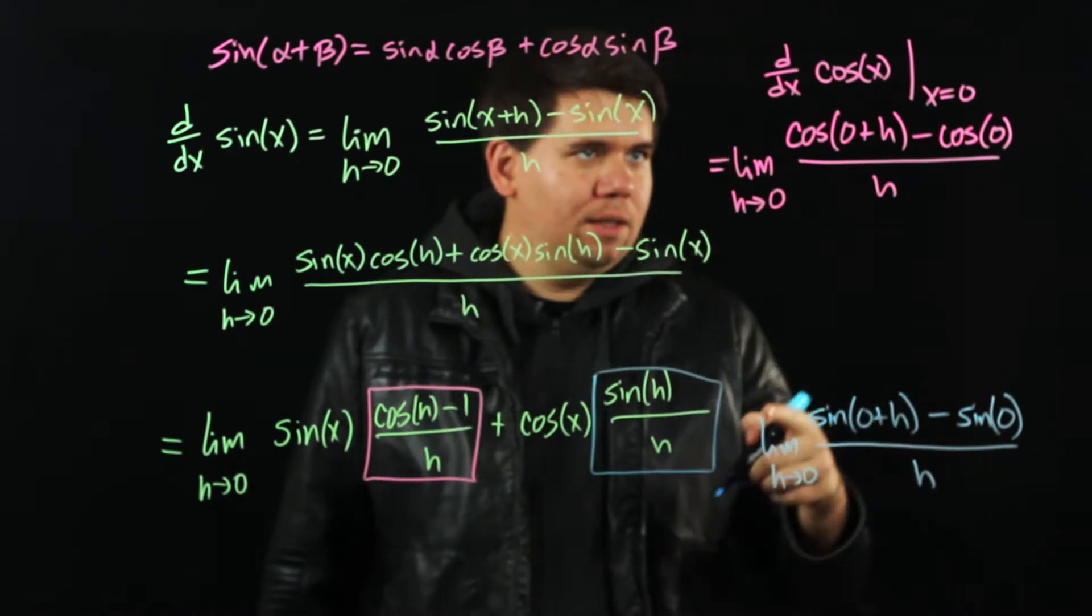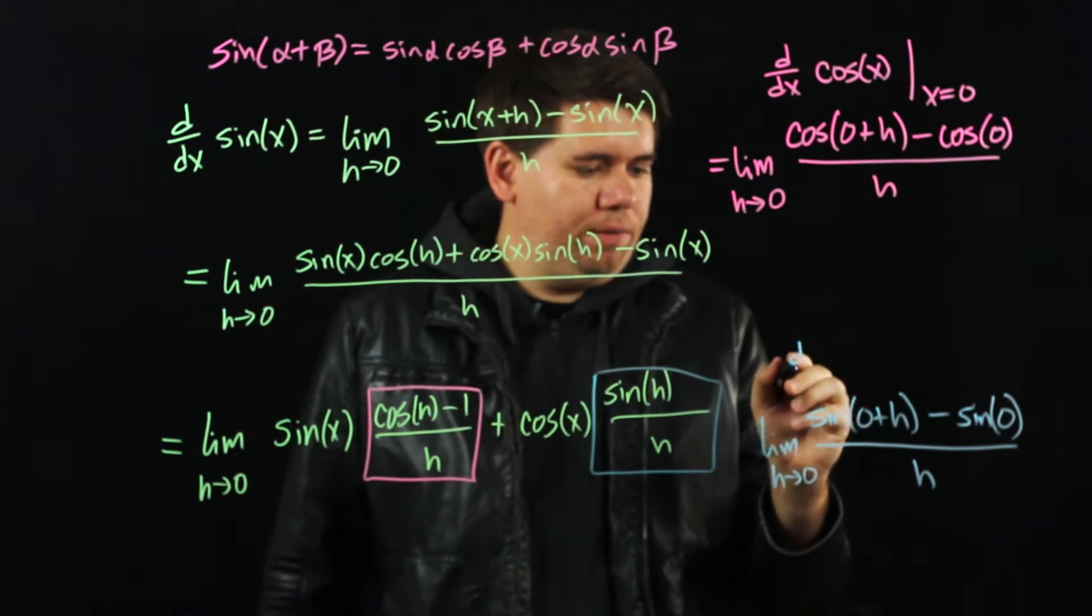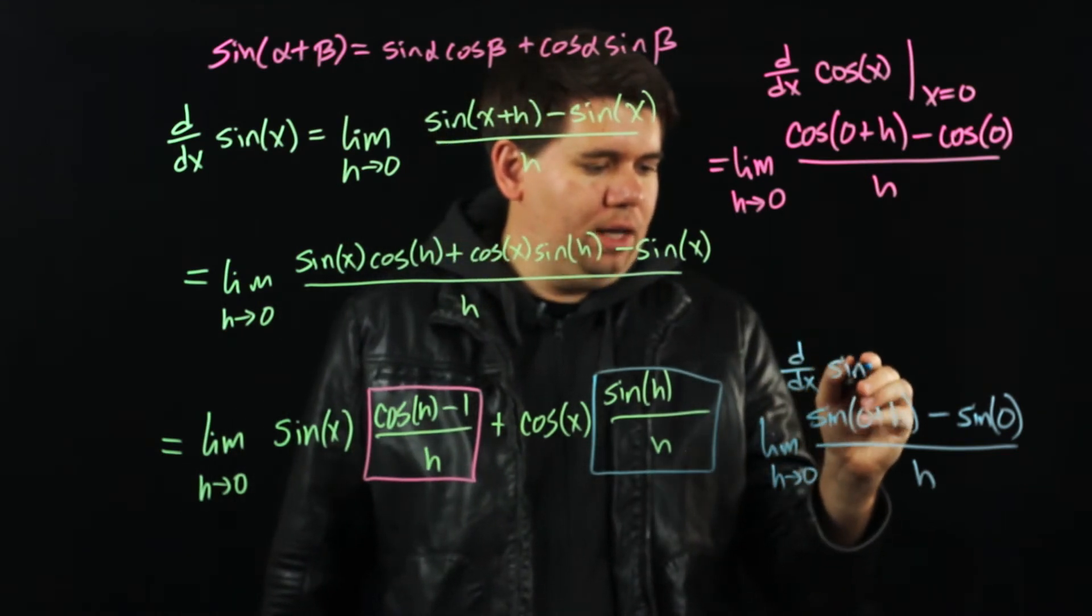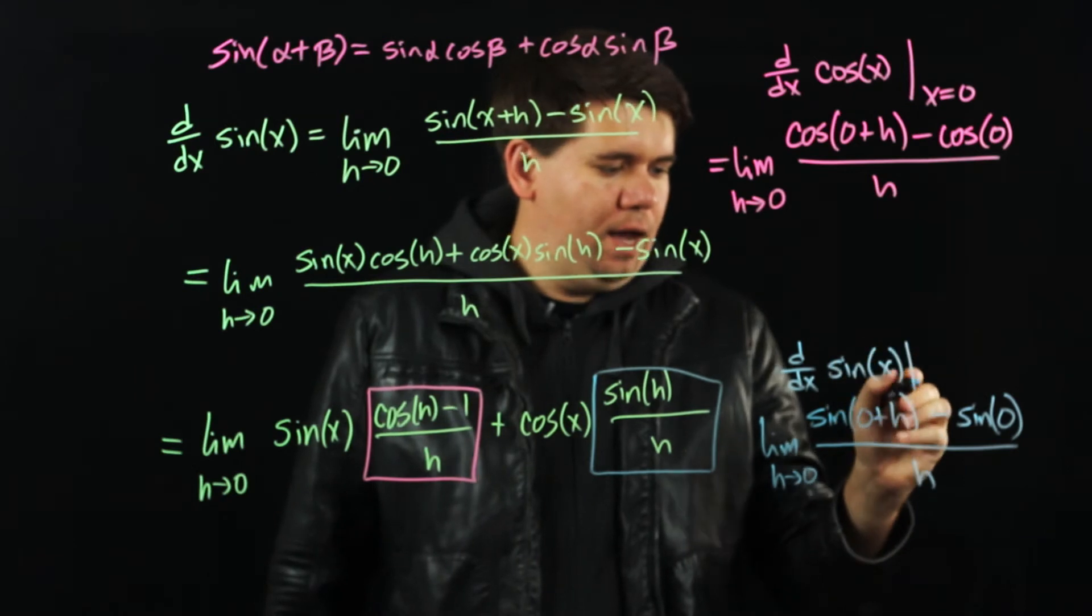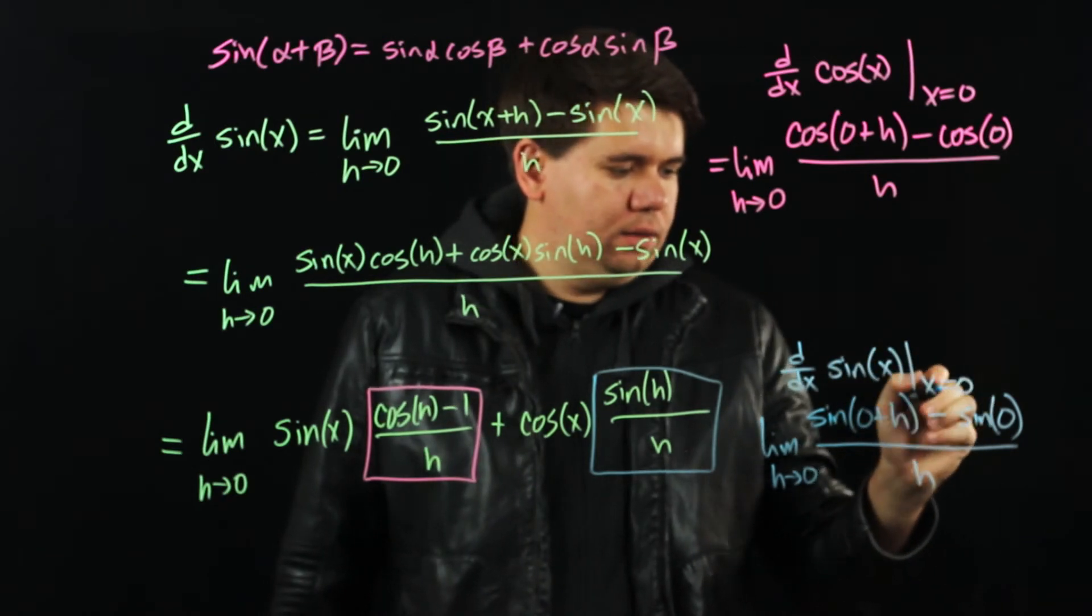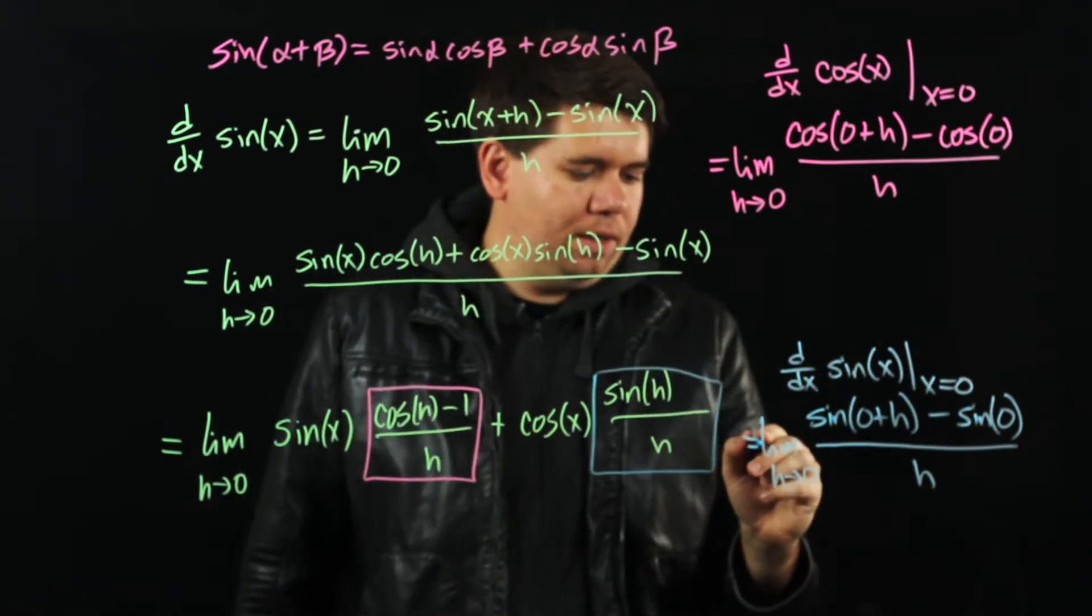But what is this? This is secretly just the derivative of your sine of x when your x is 0. That will give you this limit.